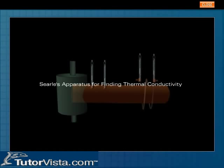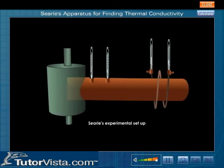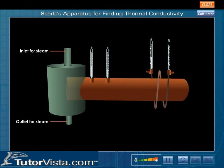Searle's apparatus is used for finding the coefficient of thermal conductivity of a solid experimentally. The experimental setup is displayed here. The material whose coefficient of thermal conductivity is to be determined is taken in the form of a cylindrical rod.